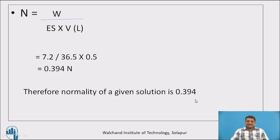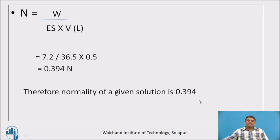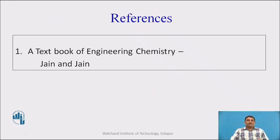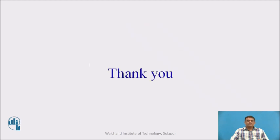In the second example, by knowing the weight of solute, the equivalent weight of solute, and the volume of the solution, we calculated the normality, which is 0.394. All this material has been prepared using the textbook of Engineering Chemistry written by Jain and Jain. Thank you.